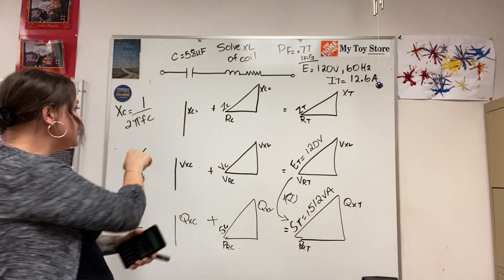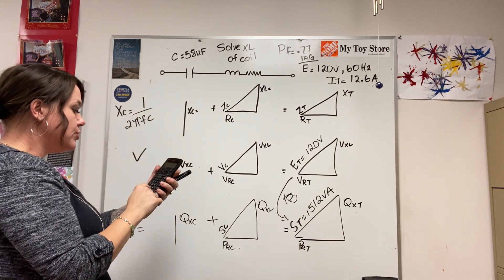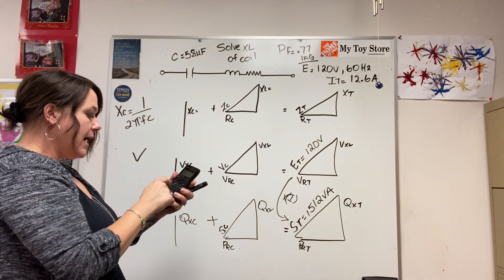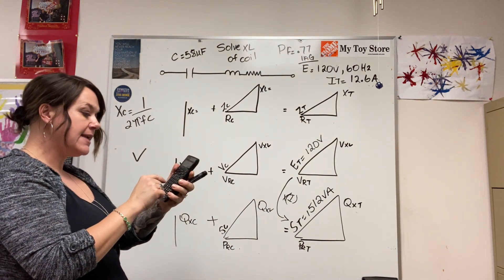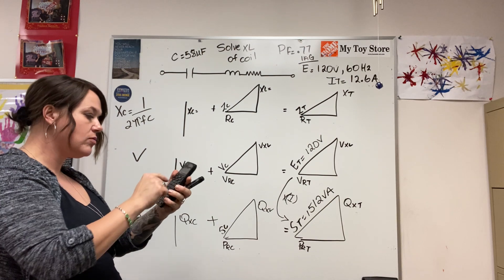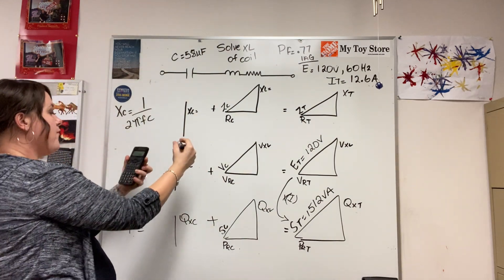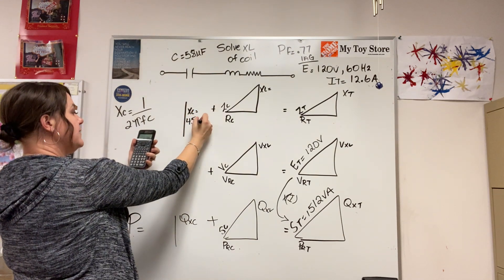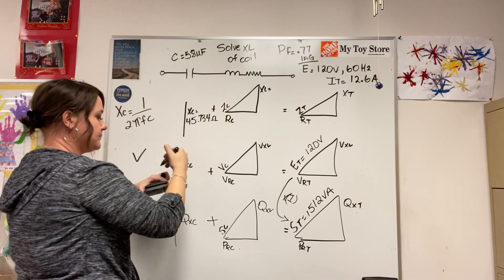58 times exponent negative 6 gives me - I like to do the bottom part first and then I just inverse it. So 2 times π times 60 times 58 exponent negative 6 equals, inverse that, I have an XC of 45.734 ohms.